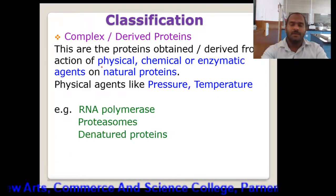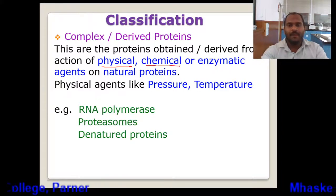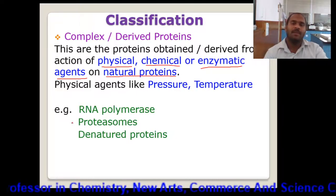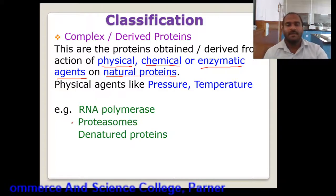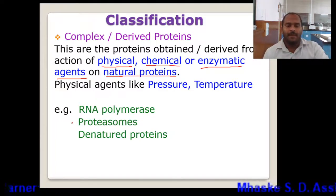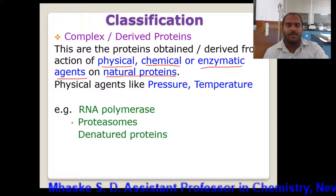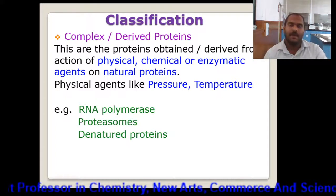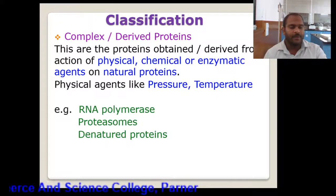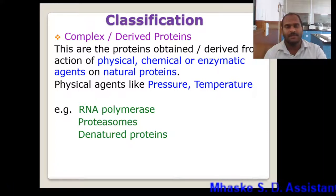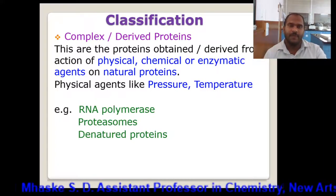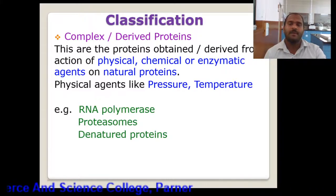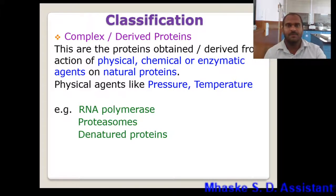So in the complex or derived proteins, these are the proteins which are obtained from the action of physical, chemical, or enzymatic agents on natural proteins. Since they are derived from the natural proteins, therefore they are called derived proteins. The simplest example to remember is RNA polymerase, proteans, or denatured protein. So on the basis of composition, they are classified as simple protein, conjugated protein, and complex protein. Simple protein has only amino acids. Conjugated protein has protein plus a prosthetic group. And complex or derived proteins are derived by physical, chemical, or enzymatic action on natural proteins.